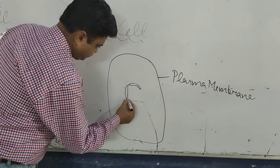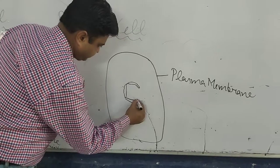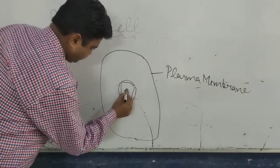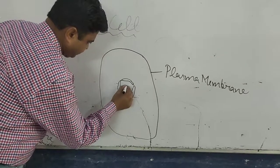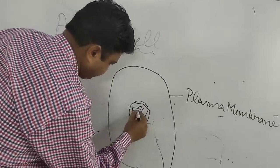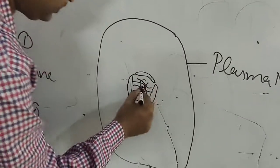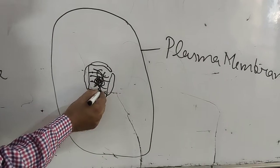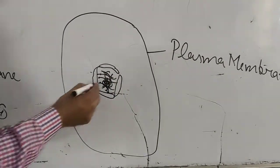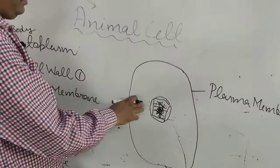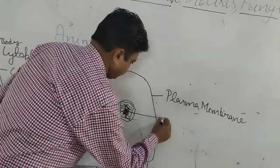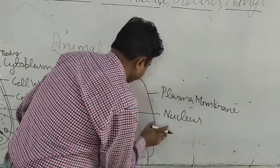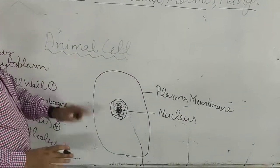In the animal cell, the control center — the nucleus — is found in the middle of the cell with a double membrane. The nucleus contains a dense body called the nucleolus, covered by thread-like structures called chromosomes, and genes are found on the chromosomes. The nucleus is located at the center of the cell in the case of the animal cell.